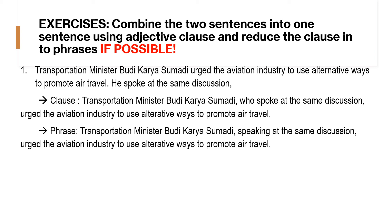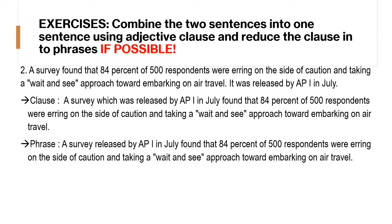For Number 1, we can combine these two sentences into one clause: 'Transportation Minister Budi Karyasumadi, who spoke at the same discussion, urged the aviation industry to use alternative ways to promote air travel.' For Number 2, the answer is: 'A survey released by AP1 in July found that 84% of 500 respondents were erring on the side of caution and taking a wait-and-see approach toward embarking on air travel.' This can be reduced into a phrase.